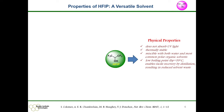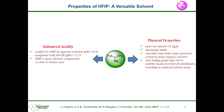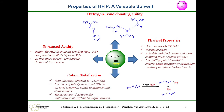HFIP has a very low boiling point of 59 degrees Celsius, which enables facile recovery of the solvent by distillation, resulting in reduced solvent waste. Another property is its enhanced Brønsted acidity, with a pKa of 9.3, directly comparable to that of formic acid. It also has potent hydrogen bond donating ability and can stabilize cations as well as radical cations.